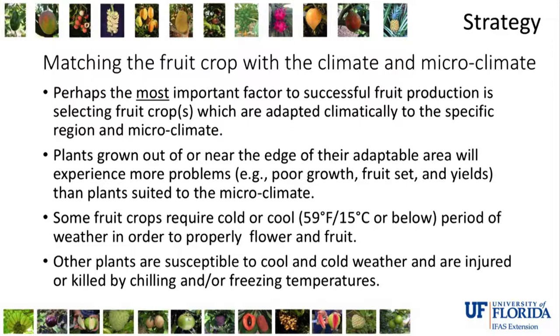One of the most important things is that sometimes people will try to grow a particular fruit crop in an environment it's not adapted to. In some cases there's technology you can use to make the plant productive and successful, but in a lot of cases, if you place the wrong tree in an environment it's not adapted to, you end up struggling to get the tree to produce and to be sustainably producing.